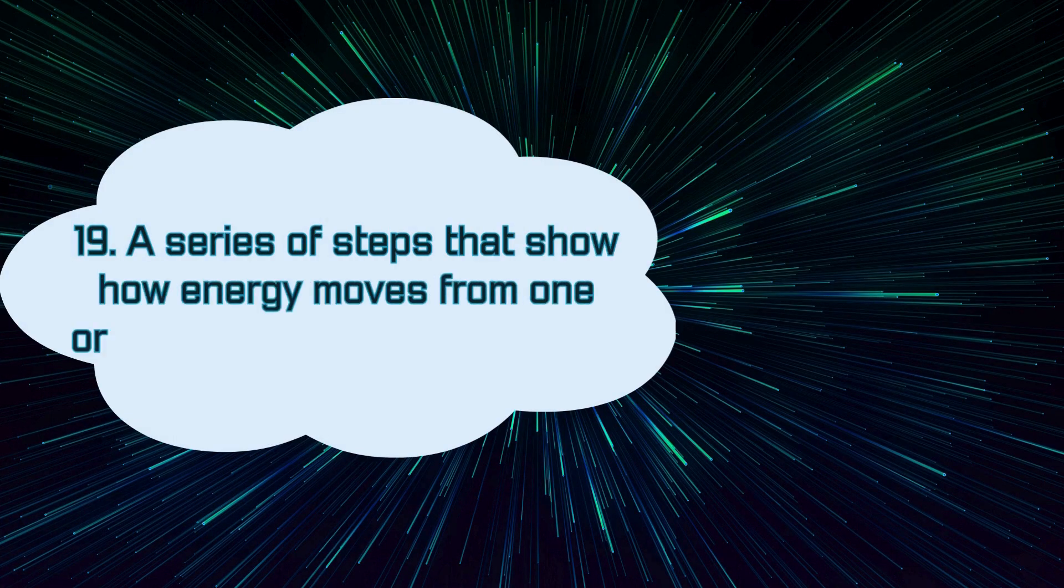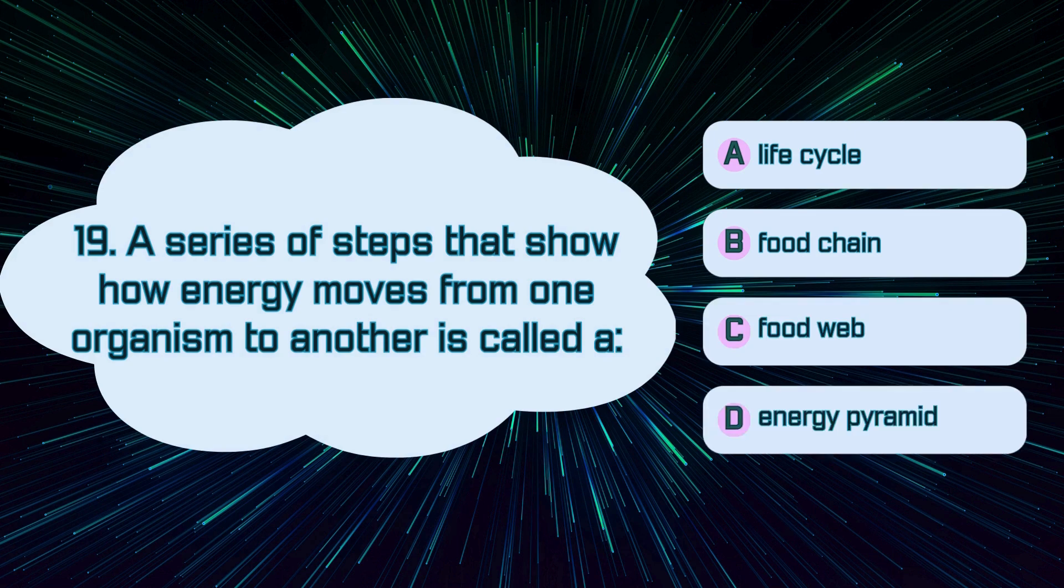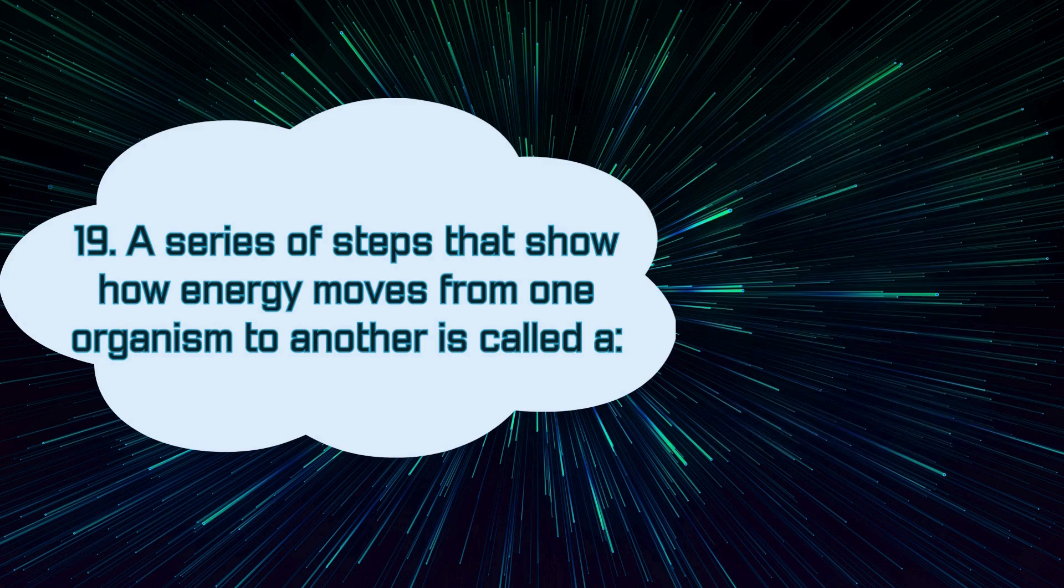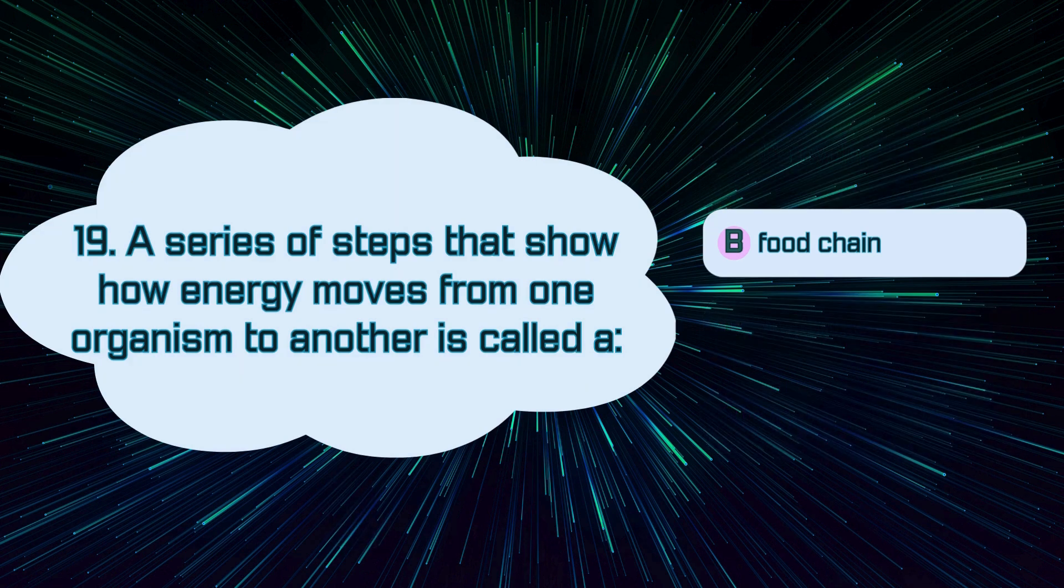Number 19. A series of steps that show how energy moves from one organism to another is called A. Lifecycle, B. Food chain, C. Food web, D. Energy pyramid. The correct answer is B. Food chain.